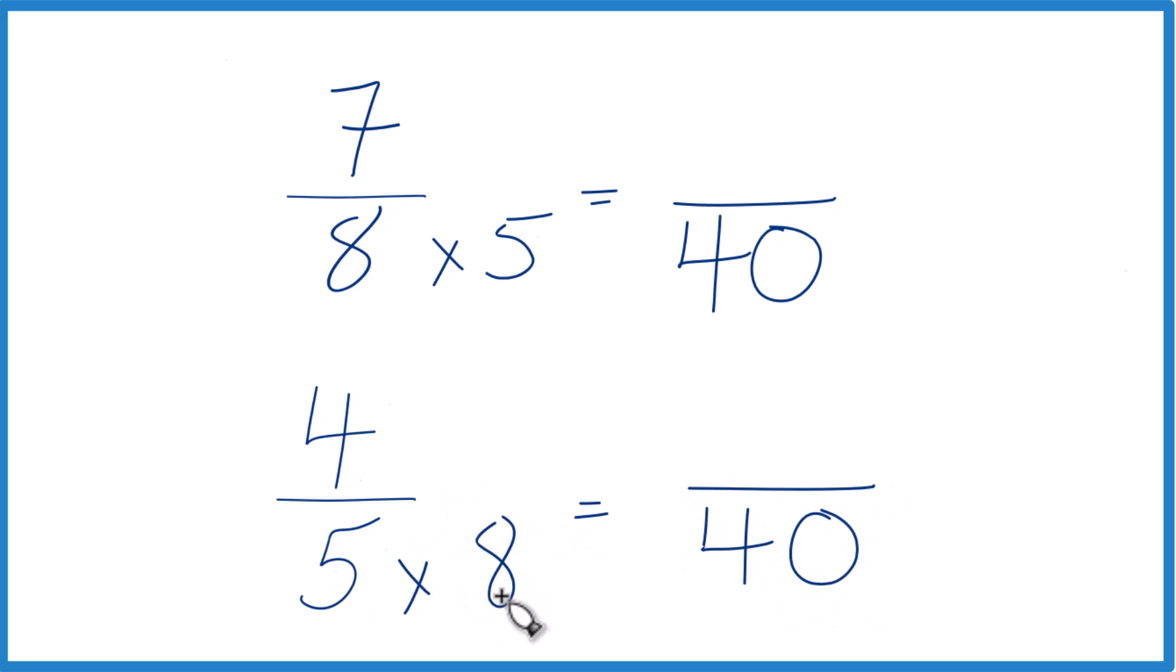But I can't just multiply the denominator by 8. I do need to multiply the numerator by 8 as well because 8 over 8, that's just 1. I don't change the value, just the way we write it. 4 times 8 is 32.